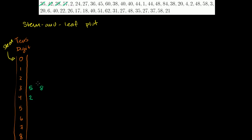Then we have a 57. We have a 2, which you could view as 0, 2. We have 24. We have 27. Then 36 — so in the 3 stem we now have a 35, a 38, and a 36.